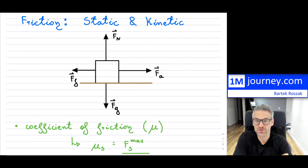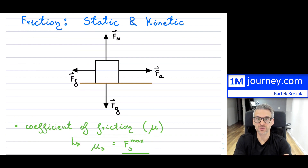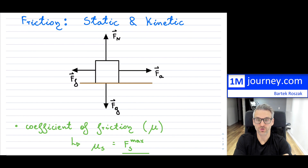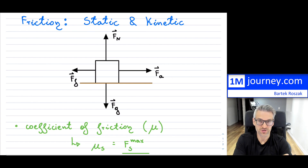What's the difference between them? The word static means there is no motion at all, and kinetic means that you are in motion — you are actually moving. If you're talking about static friction, let's concentrate on that one first.